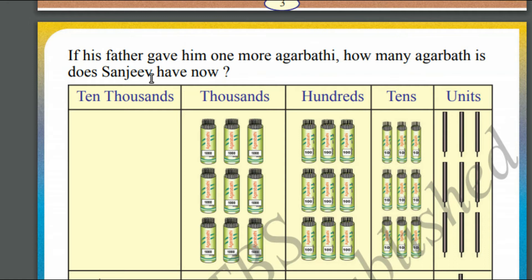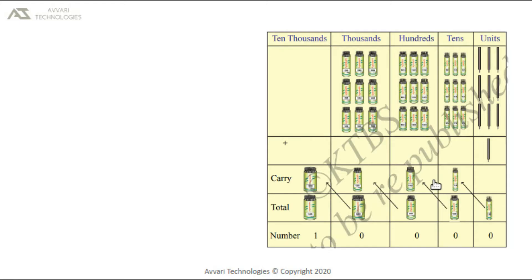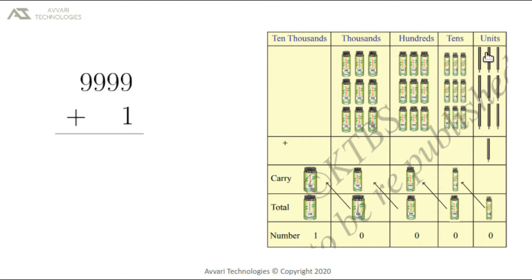Then Sanjeev's father gave him one more agarbathi. So how many agarbathis does Sanjeev have now? Before, Sanjeev had 9999 agarbathis. Now his father gave one more. In the units place we have 9 agarbathis. When we add one agarbathi, 9 plus 1 is equal to 10. How can we write 10 in the units place? We cannot write 10 in the units place, so we will carry 10 to the tens place.